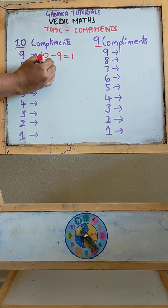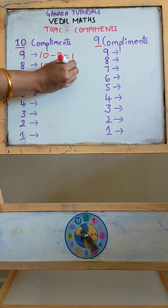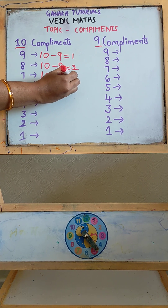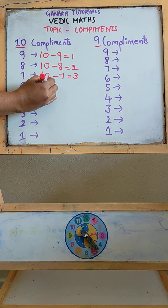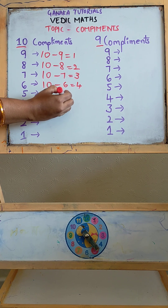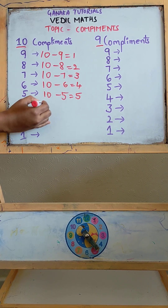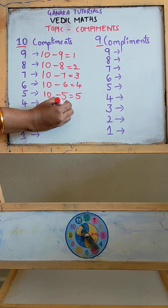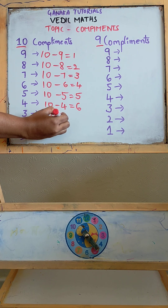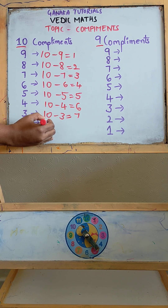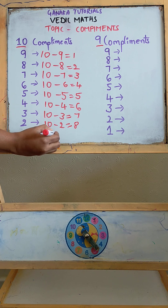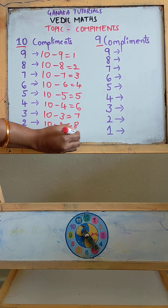Similarly, for 8: 10 minus 8 is equal to 2. For 7: 10 minus 7 is 3. 10 minus 6 is equal to 4. 10 minus 5 is equal to 5. 10 minus 4 is equal to 6. 10 minus 3 is equal to 7. 10 minus 2 is equal to 8. 10 minus 1 is equal to 9.